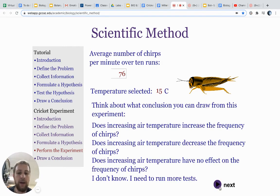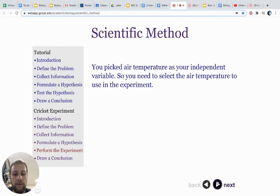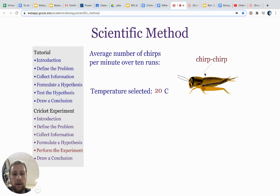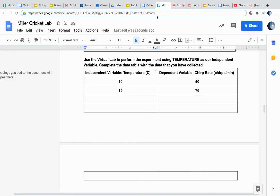What conclusion do we have here? We keep increasing it and the chirp rate keeps going up. Let's see if that trend will continue. At 20 degrees, now it looks like that rate's going up. 112. So we got 20 degrees Celsius, 112 chirps per minute.